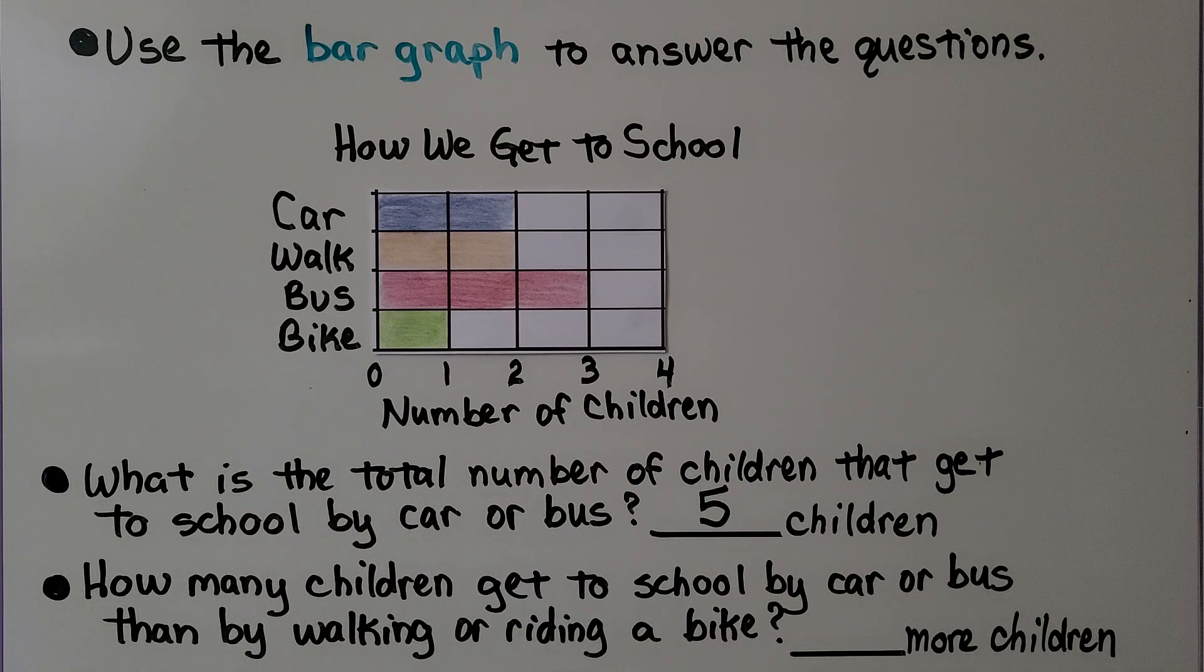We can use subtraction. Five minus three is two. That means two more children get to school by car or bus than by walking or riding a bike.